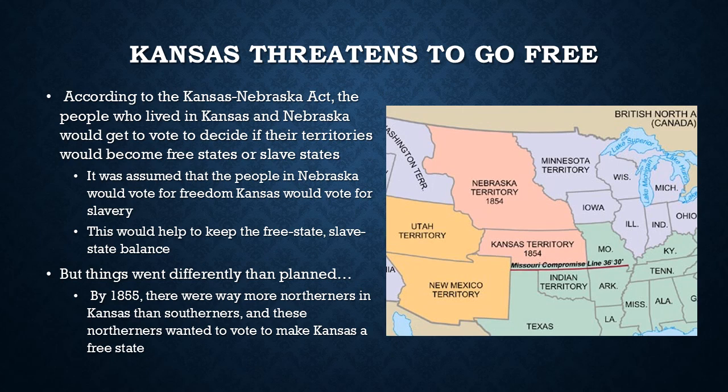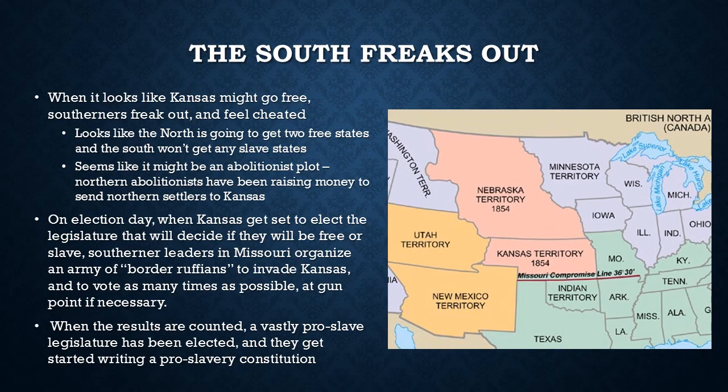But this turned out not to be the case. By 1855, there were way, way more northerners in Kansas than southerners, and these northerners were going to vote to make Kansas a free state. This is a big deal. When it looks like Kansas is going to turn into a free state, southerners freak out — they feel cheated, because it looks like the North really just gave themselves two free states and that the South is not going to get any slave states out of the deal.